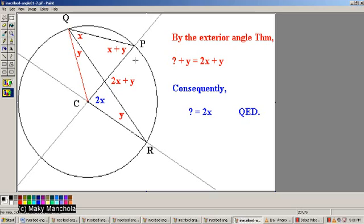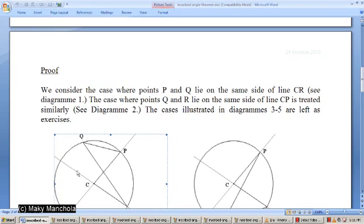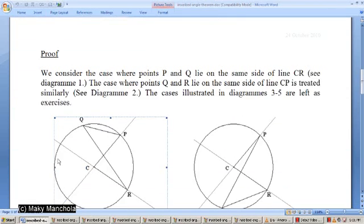Our original claim was that the inscribed angle PQR was half of the central angle PCR. And yes, we have established that here. Our inscribed angle had measure X. We found that the central angle has measure 2X. Therefore, the inscribed angle is half the measure of the central angle, which was our goal. This completes our short proof of one of the cases of the inscribed angle theorem.